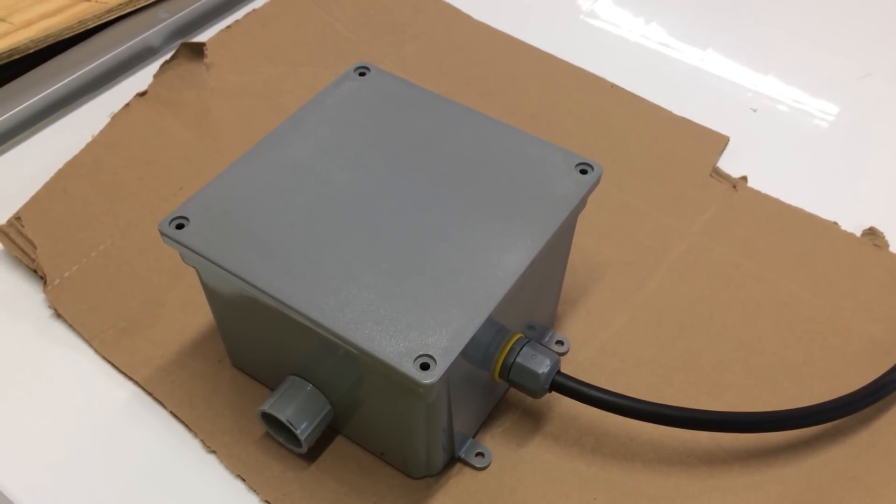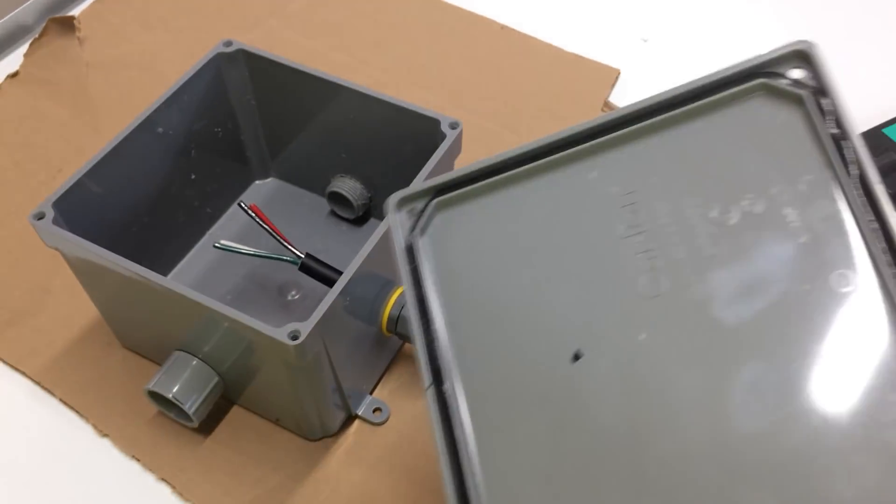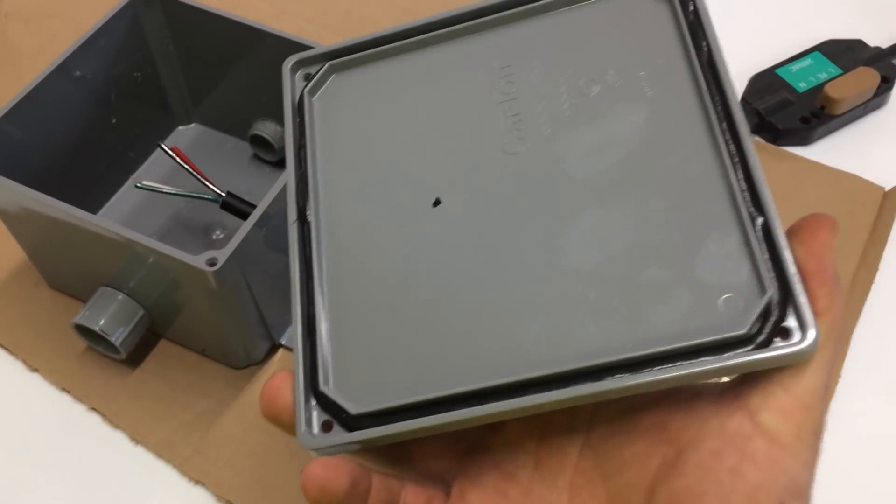Okay, we have here a 6 inch by 6 inch by 4 inch gray plastic box appropriate for electrical. It's got the weatherproof seal there.